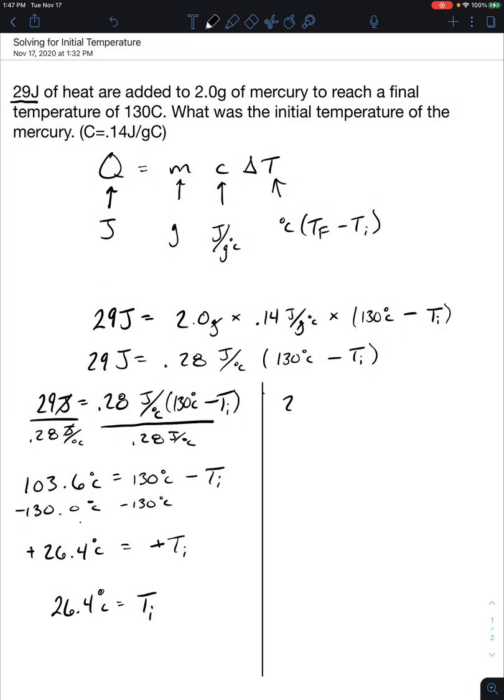I'm going to rewrite this equation as 29 joules equals 0.28 joules per degree Celsius times 130 degrees Celsius minus the initial temperature Ti. So this is very similar. If you watched the final temperature video it's the exact same way. We're going to distribute the 0.28 to everything in these parentheses.